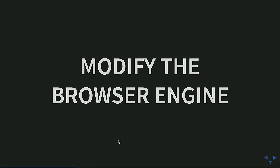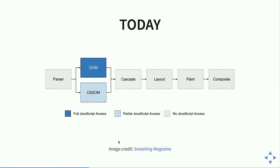Houdini modifies the browser engine. We're going to go through the browser rendering process quickly. I marked the session advanced because if this diagram is the first time you're seeing it, a lot of this won't click immediately. But this is the way a web browser goes from taking text files on a server and turning them into pixels on your screen. The first box is the parser — when text comes to your browser, the browser reads through it, tokenizes everything, and builds two object models: the document object model (DOM) and the CSS object model (CSSOM).